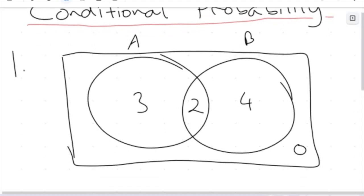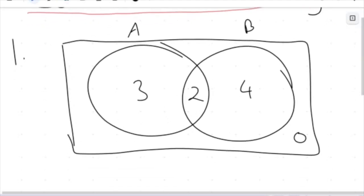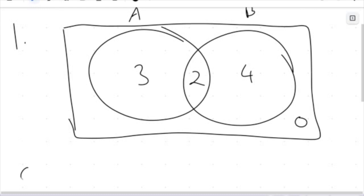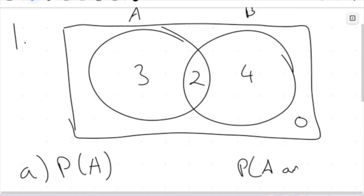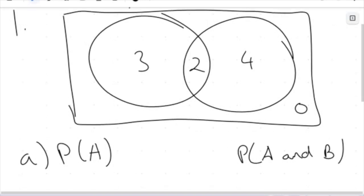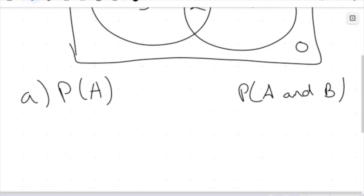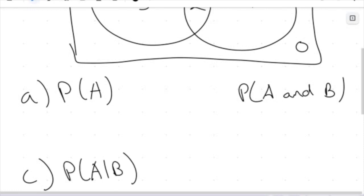I have a Venn diagram here and we are going to try to do a couple of questions. Using this Venn diagram, I want to find the probability of getting A, the probability of getting A and B. These are warm-up questions similar to last year's content, and then we'll introduce the idea of conditional probability again and look at how we can calculate that.